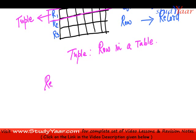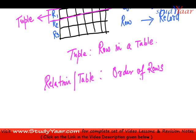In a relation or a table, the order of rows is irrelevant. This is the keyword here.